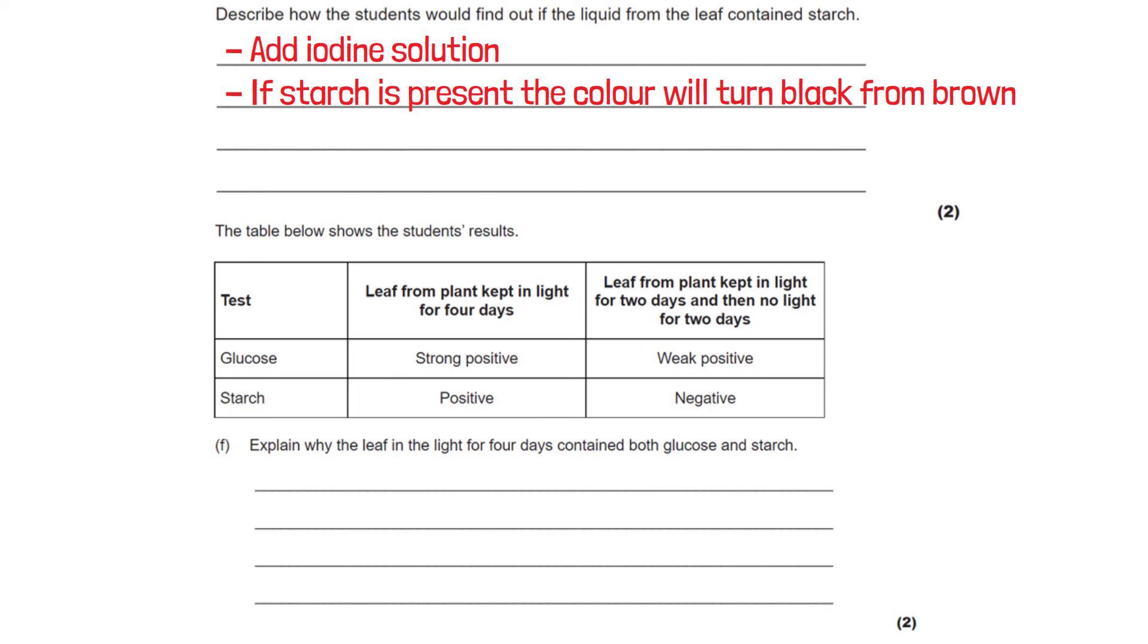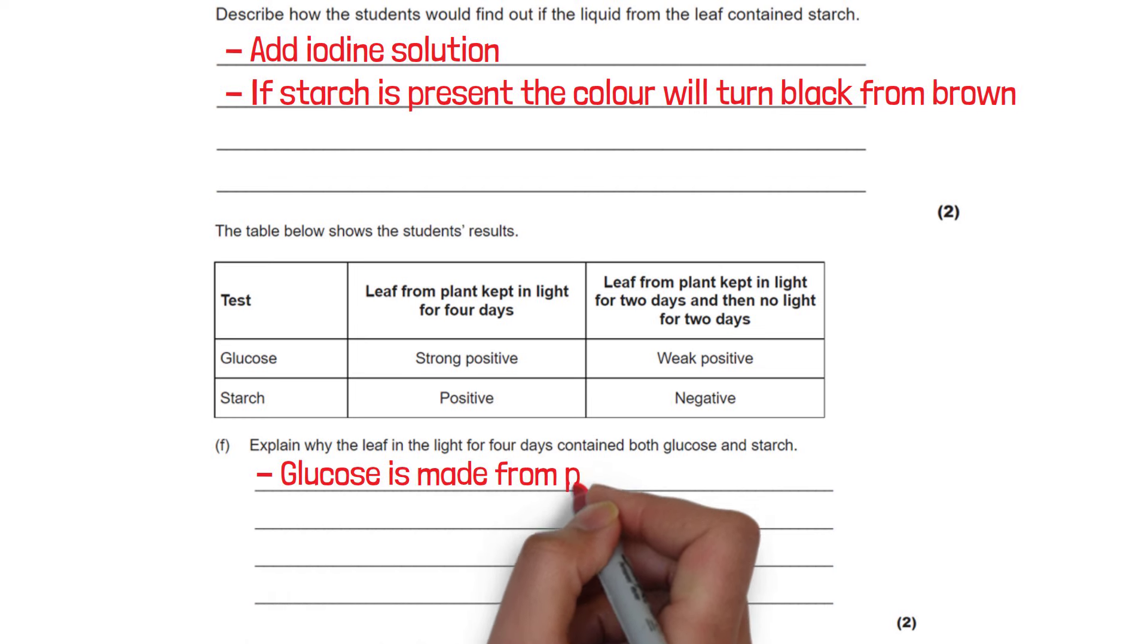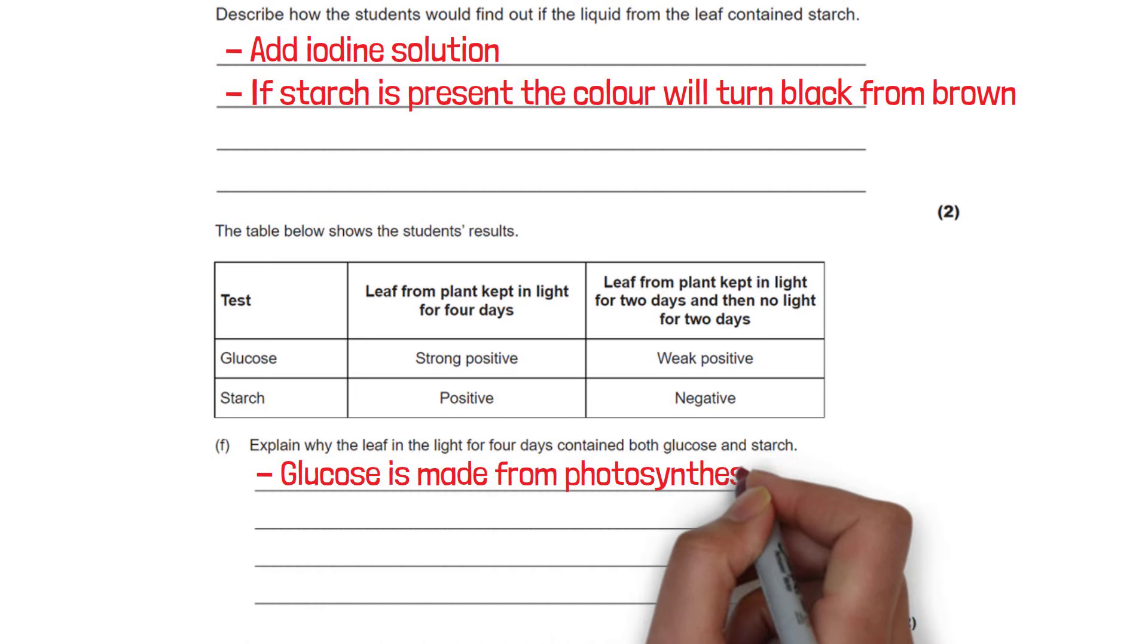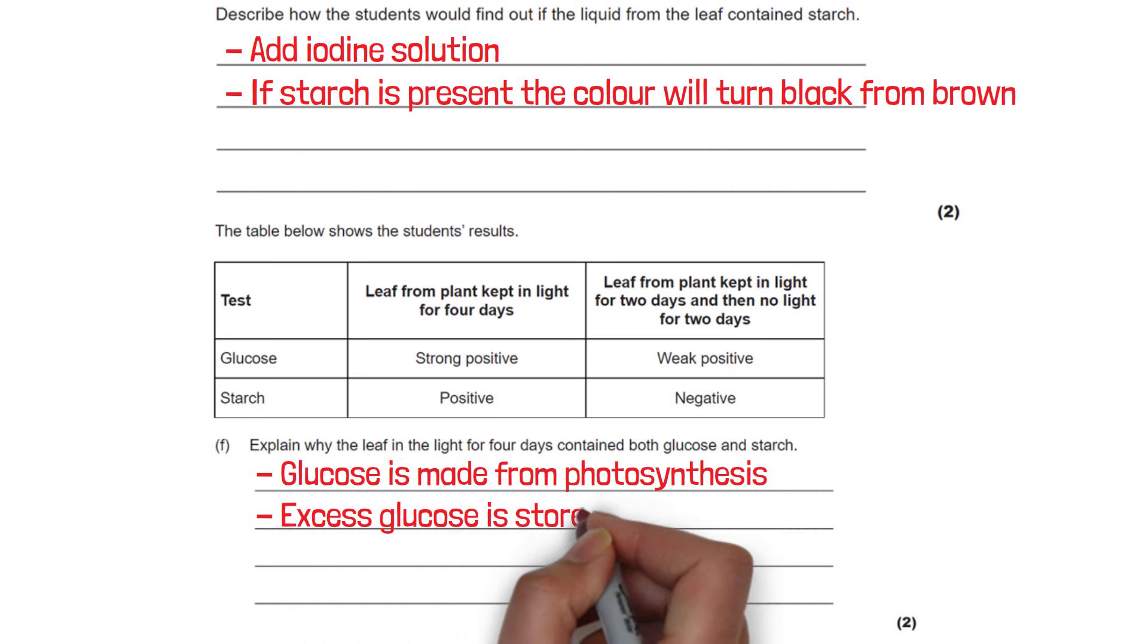The table below shows the students results and the question is explain why the leaf in the light for 4 days contained both glucose and starch. Well where did the glucose come from? That was made from photosynthesis. Because the plant was exposed to 4 days of light there was an excess amount of glucose that was made and this was stored as starch.